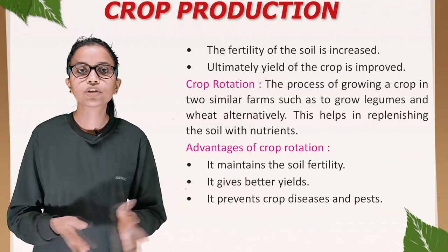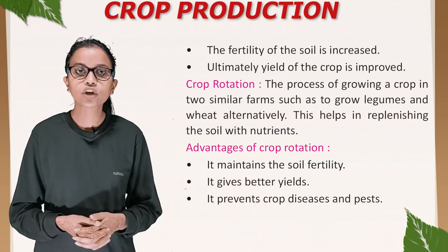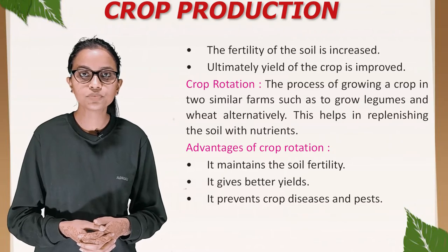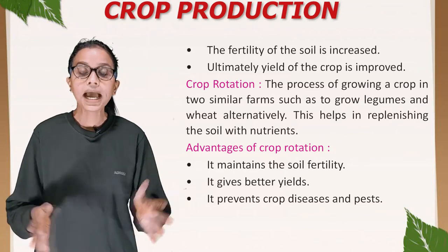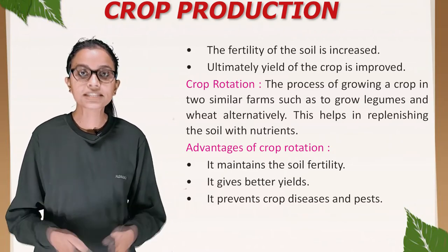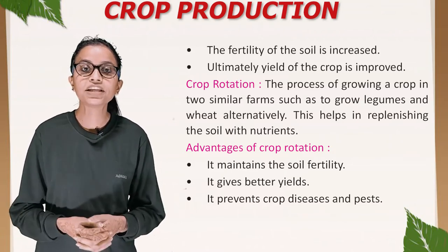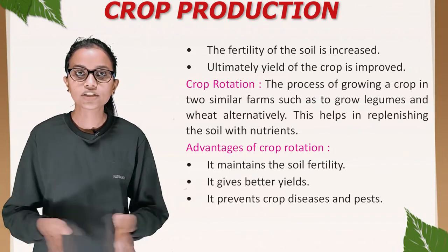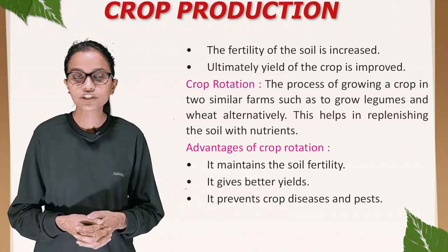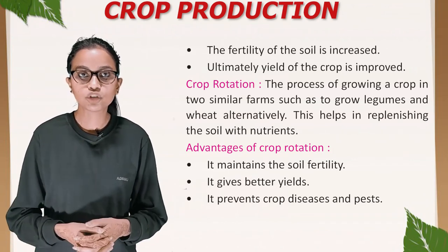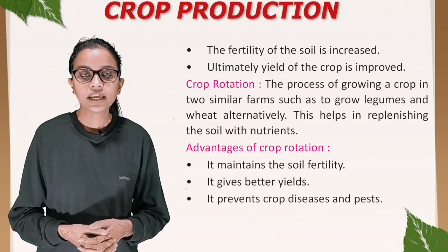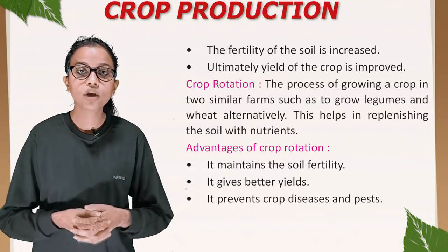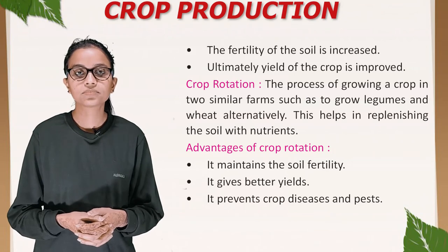Crop rotation: the process of growing crops in two similar farms — such as growing legumes and wheat alternatively — helps in replenishing the soil with nutrients. Advantages of crop rotation: it maintains soil fertility, it gives better yields, and it prevents crop diseases and pests.